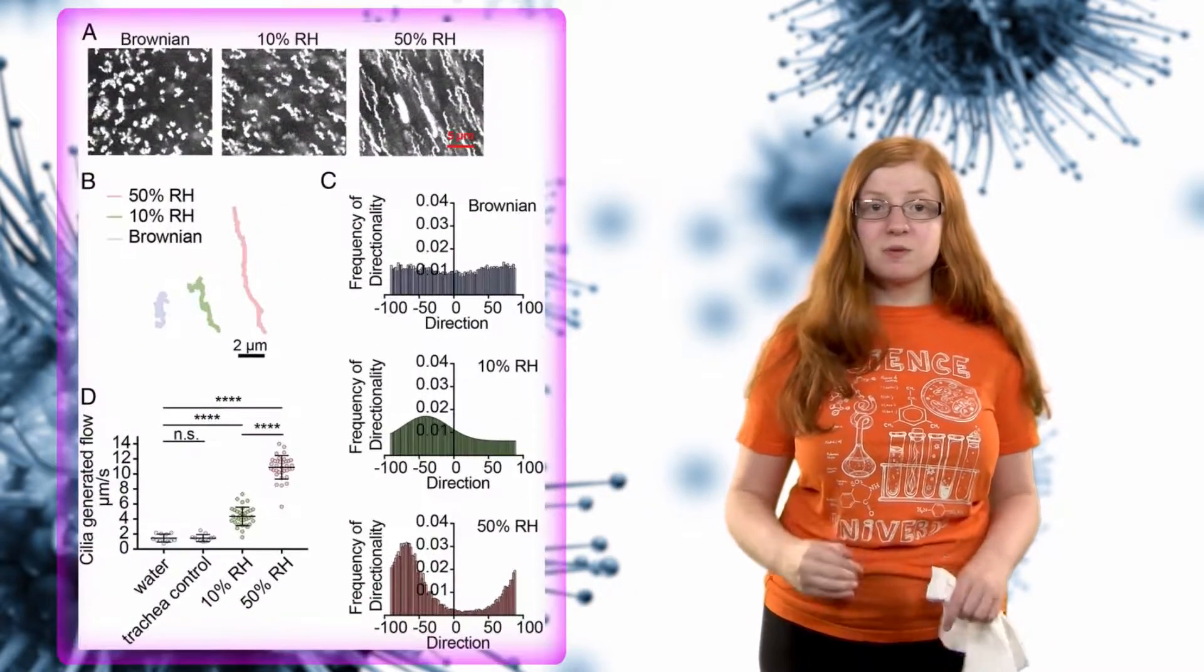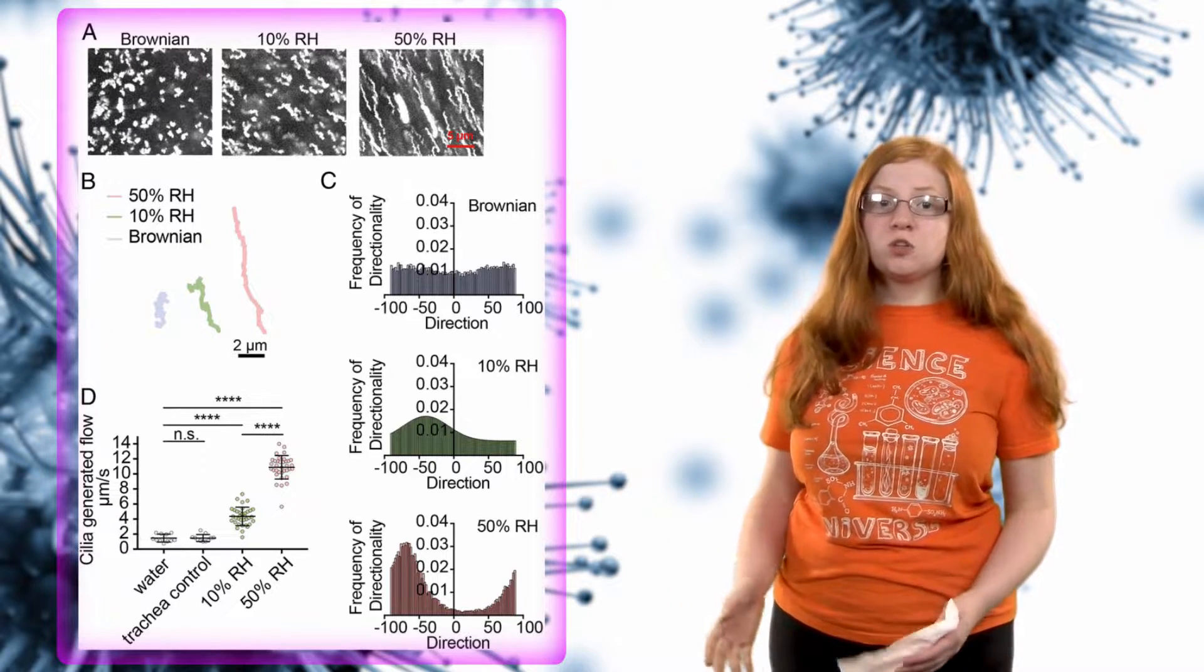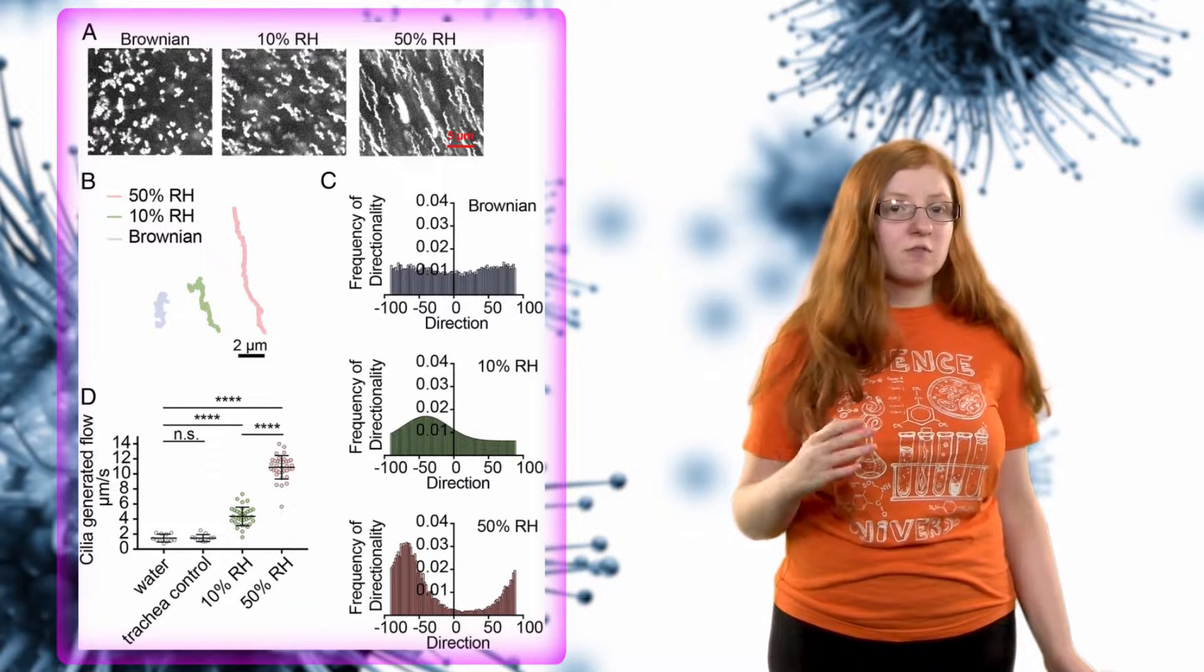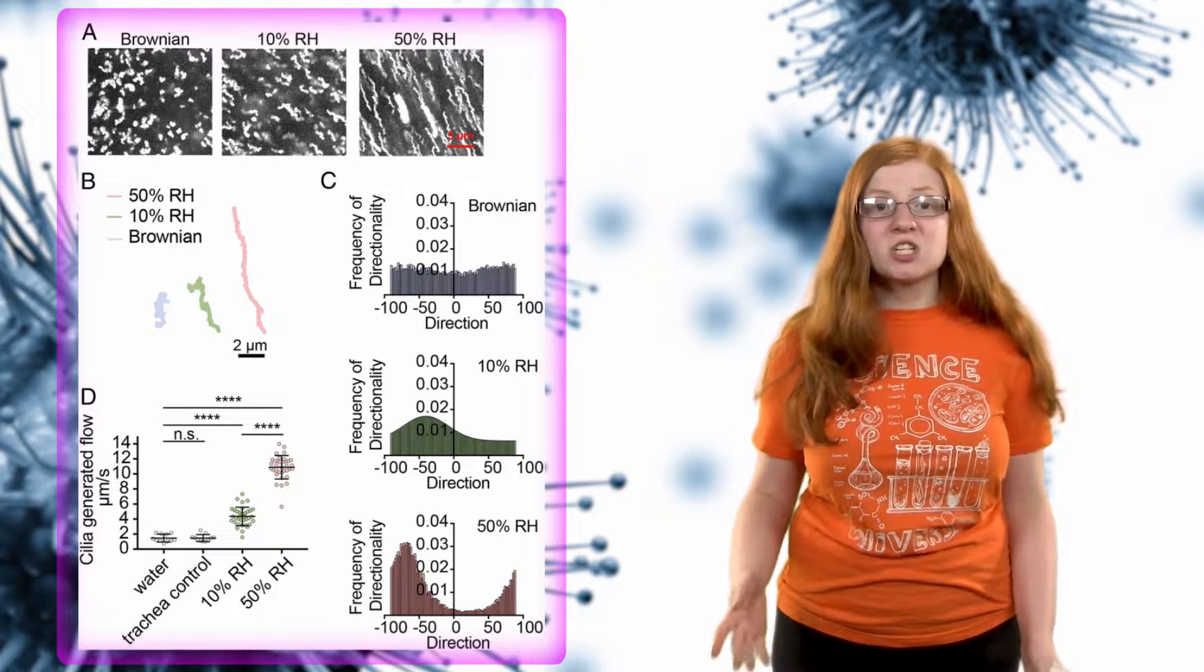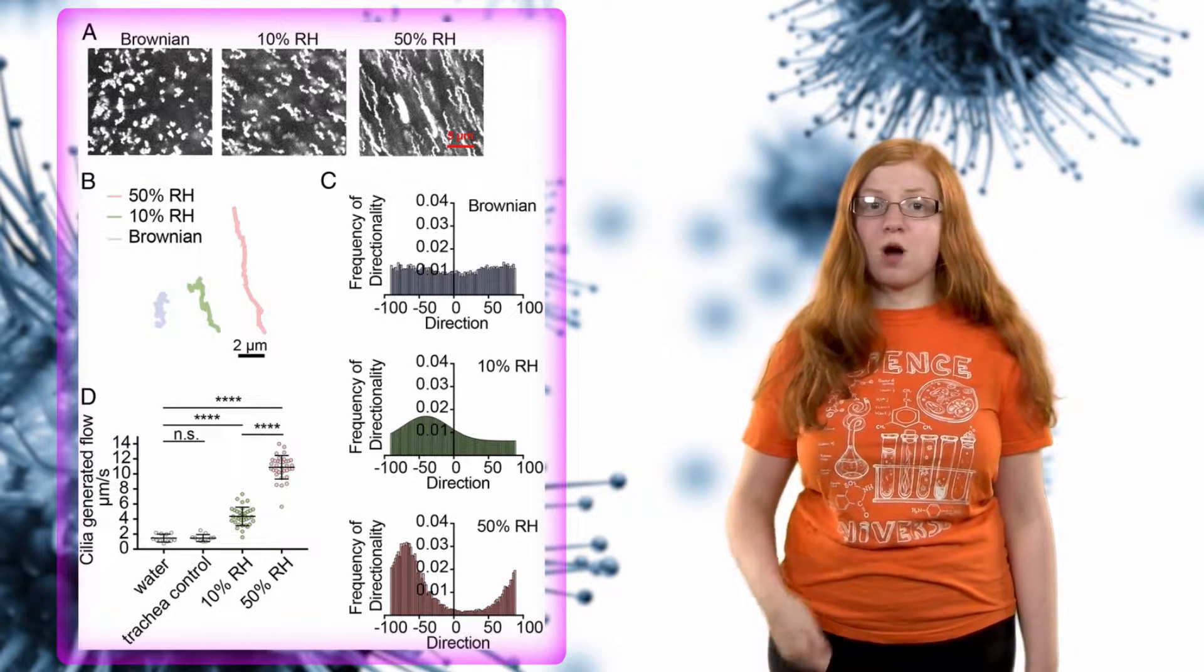What the low humidity does is prevent this process from happening by not only slowing down the speed of the movement - instead of the usual movement of moving back and forth every 14 to 16 times per second - but also possibly changing the direction, making the mucus go up.